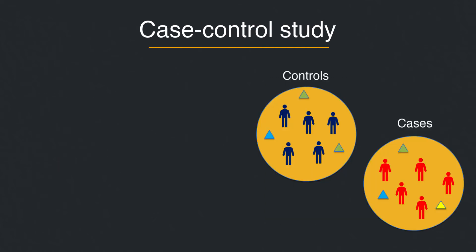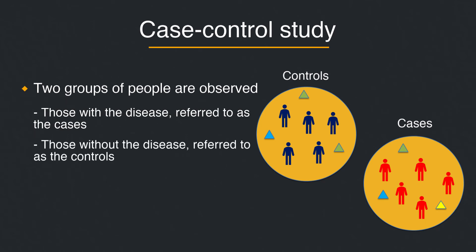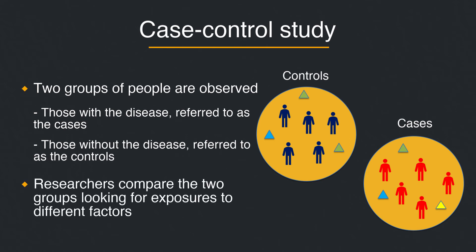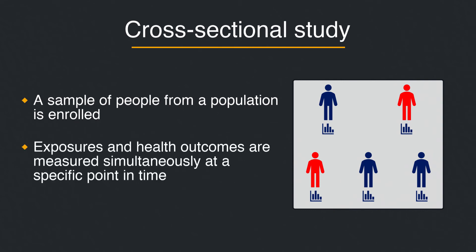In a case-control study, two groups of people are observed: those with the disease, referred to as the cases, and those without the disease, referred to as the controls. Researchers then compare the two groups looking for exposures to different factors. In a cross-sectional study, a sample of people from a population is enrolled, and their exposures and health outcomes are measured simultaneously at a specific point in time.